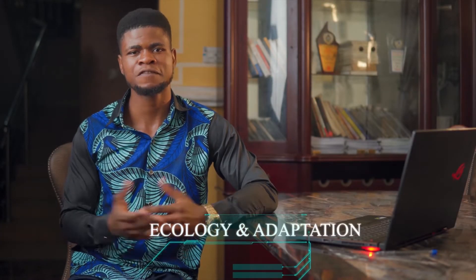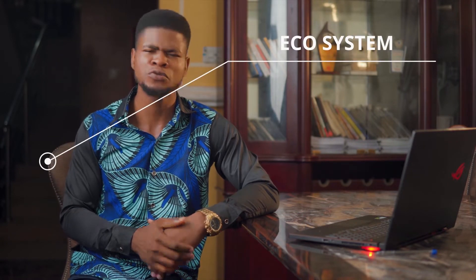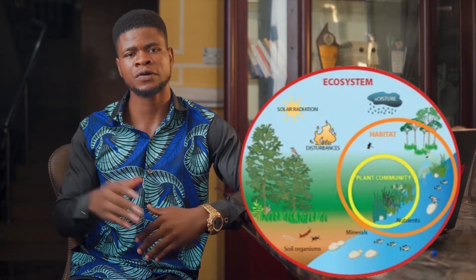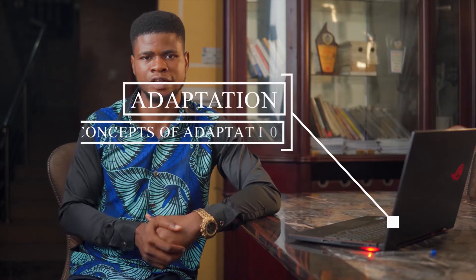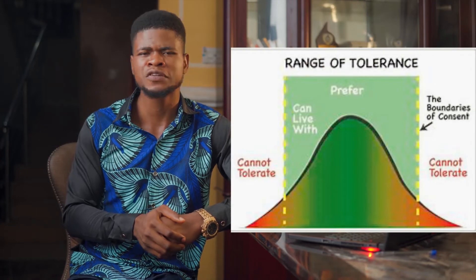The next topic is ecology and adaptation. First, you should know the ecosystem — know everything in the ecosystem, how living and non-living organisms relate with one another. You should know the concept of adaptation in its entirety: how organisms adapt to the environment. Study tolerance and tolerance ranges — very, very important, as universities do set questions from this. Attempt the question on your screen and leave the answer in the comment section.